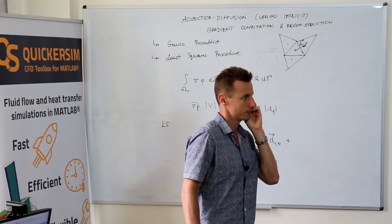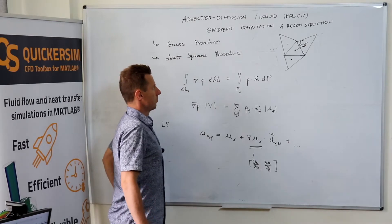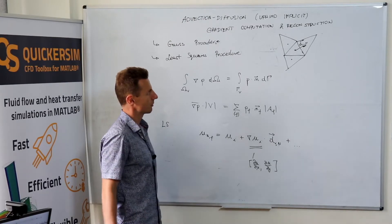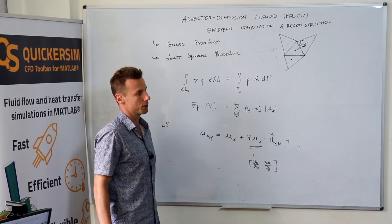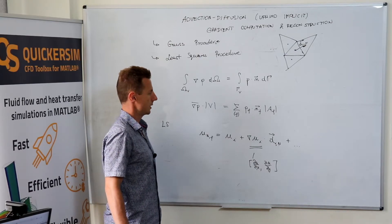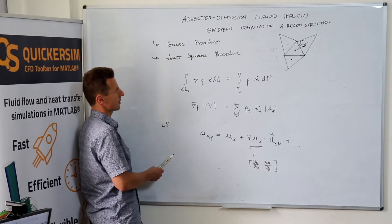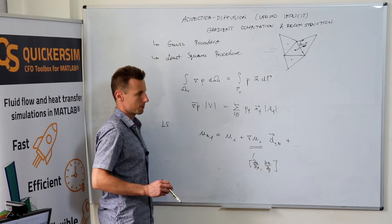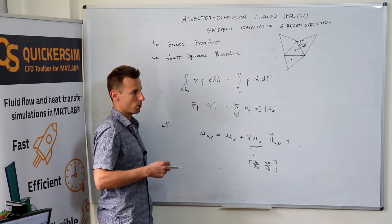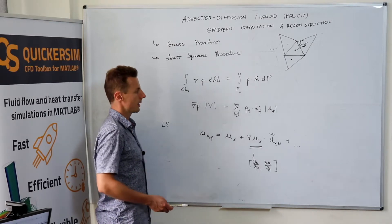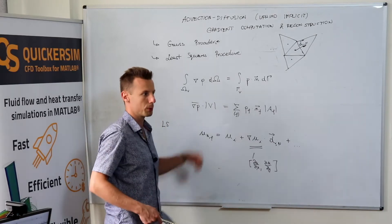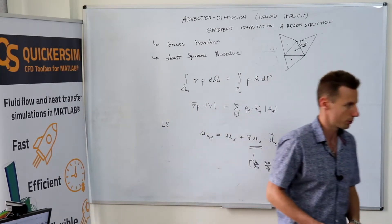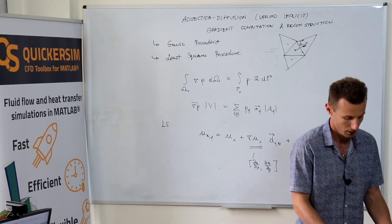Does any of those methods have advantages over the other, in the accuracy sense? I don't know. I have never gone so deeply into investigating the order or the error of the method. I did implement, many years ago, the least squares procedure for finite volume method and gradient computation, but in an explicit solver. So, we've been solving the transport equation explicitly, simply time-stepping, and then we were interested in the gradients, and that's how we've been computing them. But I have never implemented it in an implicit procedure to investigate the order or accuracy of the method. Questions?